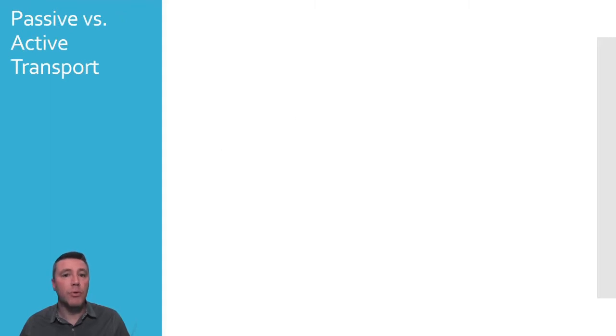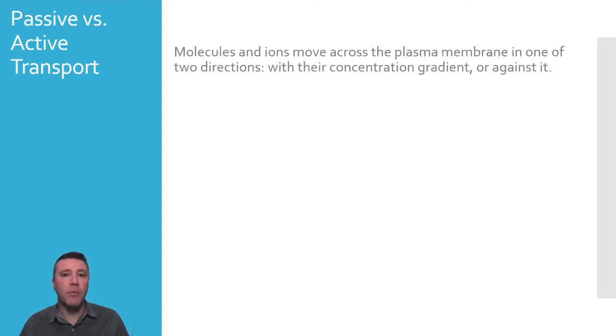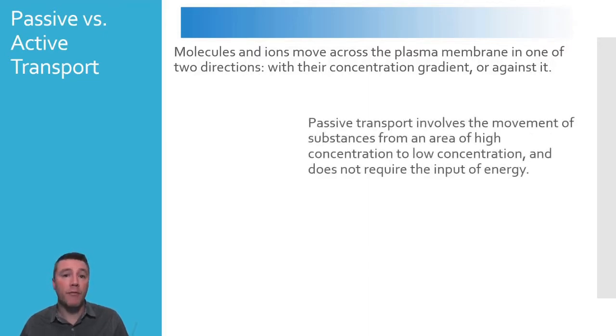Molecules and ions move across the plasma membrane in one of two ways relative to their concentration gradient. They move with their concentration gradient or against it. The transport of a particle passively involves the movement of that particle from an area of high concentration to an area of low concentration. This could be analogized by an object rolling down a hill. In order for that object to continue its downward travel, no additional input of energy is required.